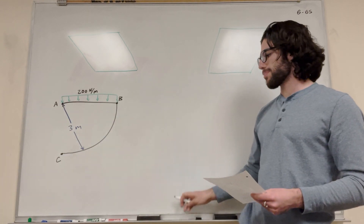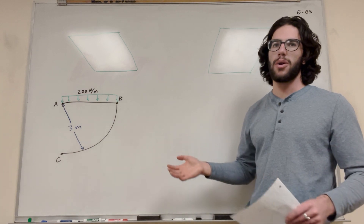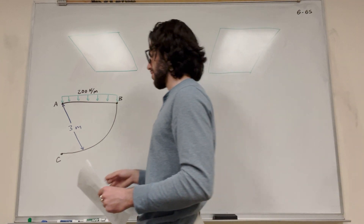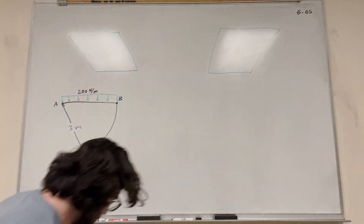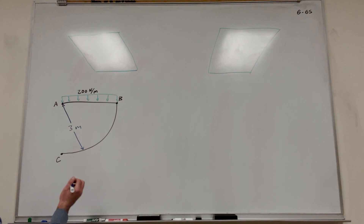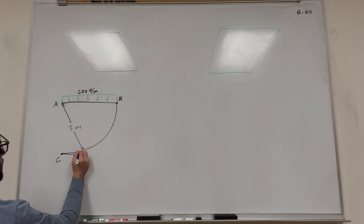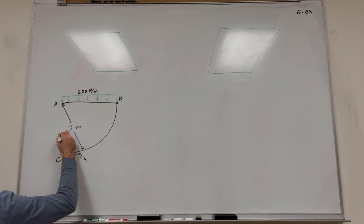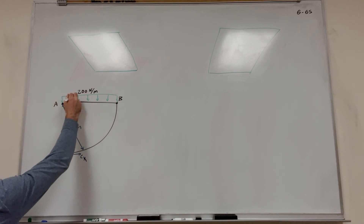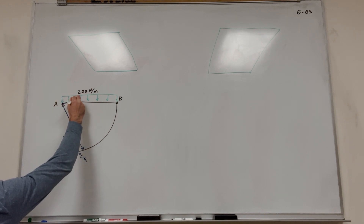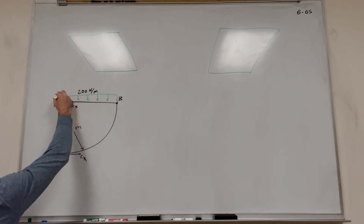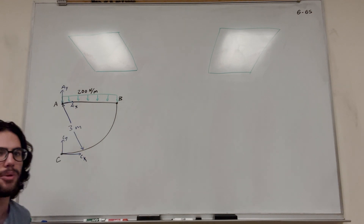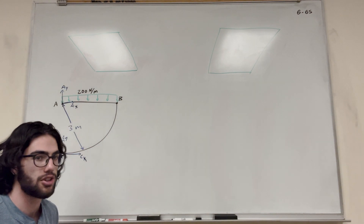I haven't finished this free body diagram yet — I just drew what we know already. We have a pin at A and C, so that means there's going to be two unknown forces at each one of those — X and Y components. So let's go ahead and draw them. That's Cx and Cy, and Ax will go this way, and Ay will go this way. We don't know if that's the way they're pointing, but that's just how we can represent it before we know.